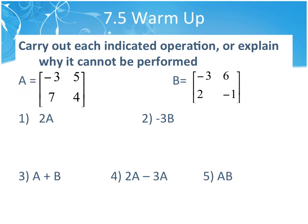The rule when you're multiplying is that the inner numbers have to match, and then the outer two give you the result. For a scalar, it totally doesn't matter — you can apply a scalar to anything. So if I multiply 2 into A, I'd get negative 6, 10, 14, and 8.